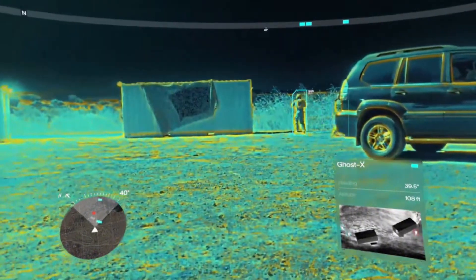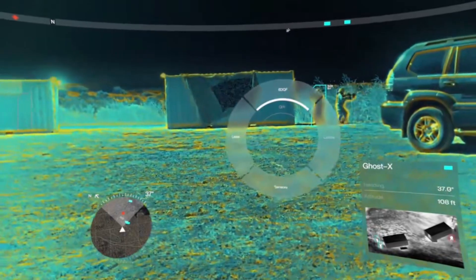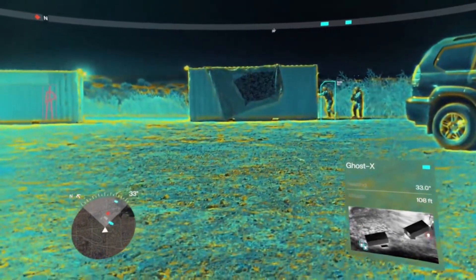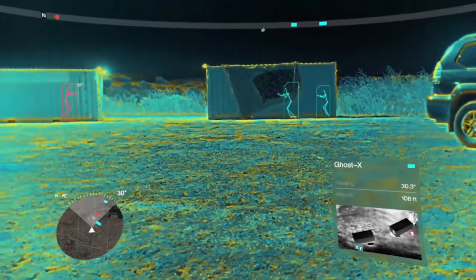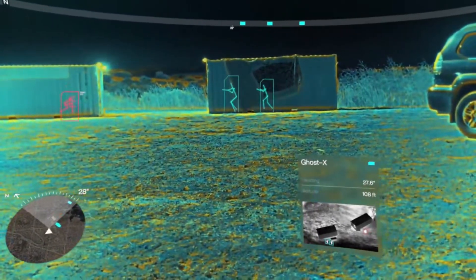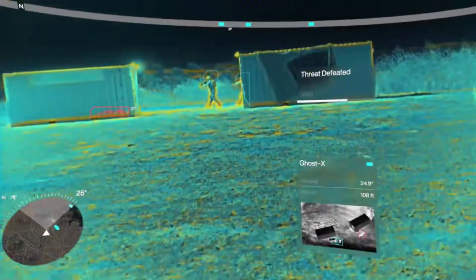Eagle Eye pulls live data from teammates' body cams, drone feeds, thermal sensors, ground radars, and more, then fuses it all into a single, real-time, 3D view right in front of the wearer's eyes.